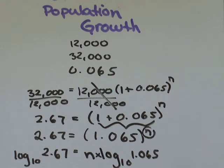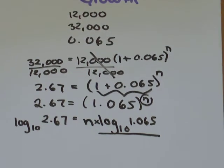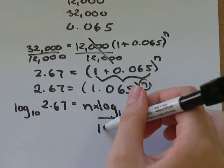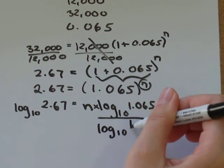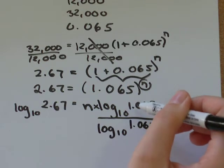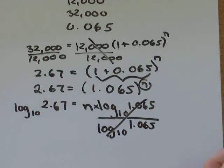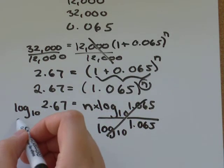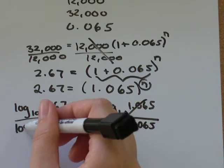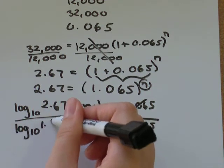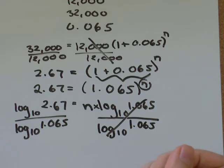To solve for n, all I have to do is divide this side by log base 10 of 1.065. Those will cancel out and I'll be left with n by itself. I have to do the same thing to the other side.